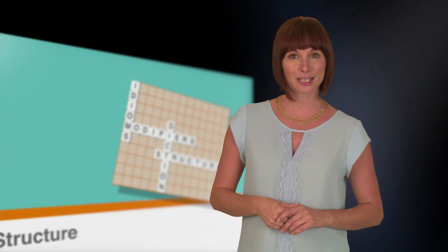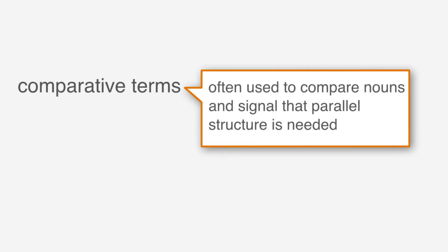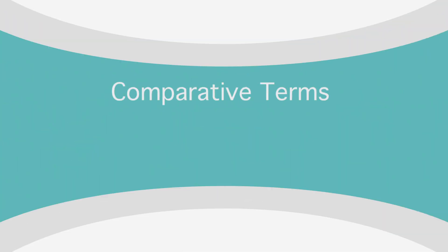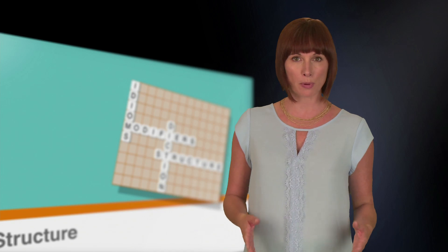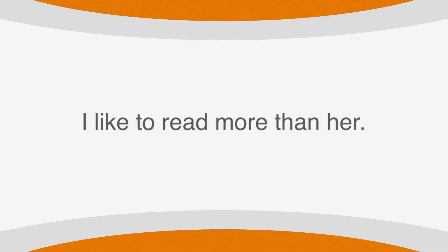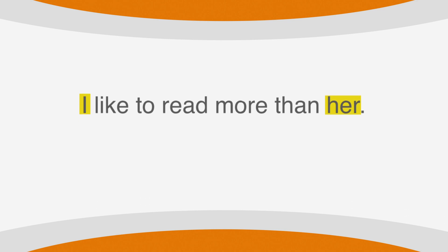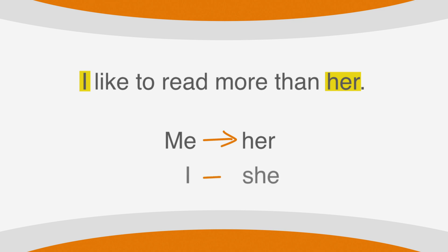Parallel structure is a great writing tool to have. Let's take a look at how this relates to comparisons. Comparative terms are often used to compare nouns and signal that parallel structure is needed. They include terms like "as" or "than." When a pronoun is used in a comparison, it has to match the pronoun it's being compared to. For example, "I like to read more than her" — the comparison isn't parallel because we have "I" compared to "her." These two pronouns are different cases. It should have "me" paired with "her," or "I" paired with "she." Since we can't start our sentence with "me like to read," we know we have to change our second pronoun.